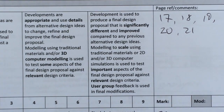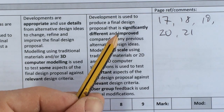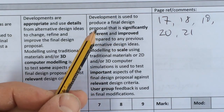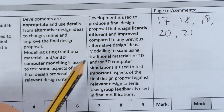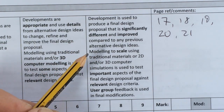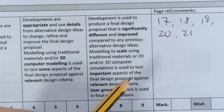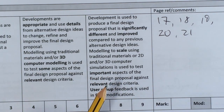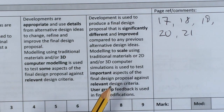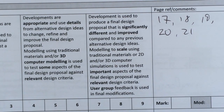Within this section, what we're looking at is producing a design proposal that is significantly different and improved. That means you couldn't simply submit your initial idea — the one your client liked — and draw that as a final design. You have to take that through steps of improvement and refinement. You also need to produce some sort of model to test the important aspects, sizes, and everything else, and check with your client. Throughout your design development work, you'll also need user group feedback showing your client has given their opinion, and that must be evidenced in your drawing and written work.